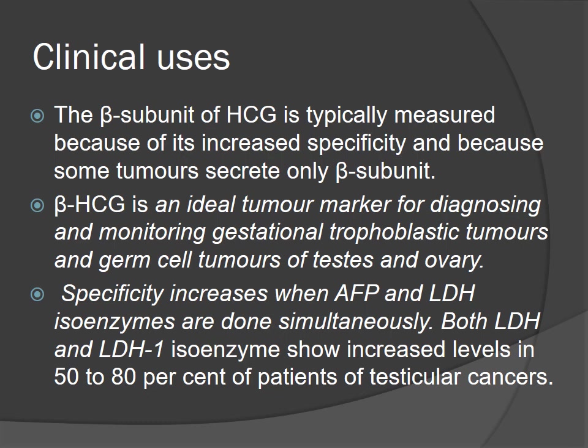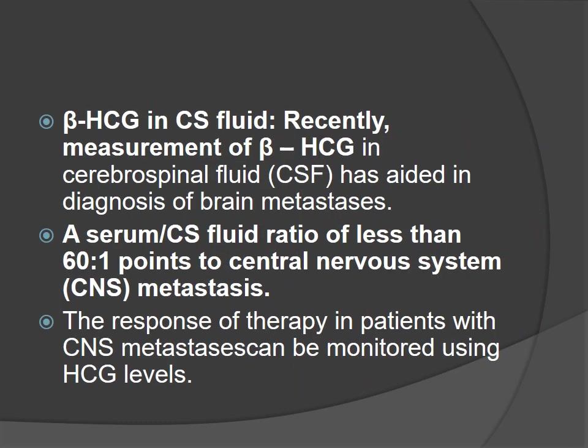Clinical uses: the beta subunit of HCG is typically measured because of increased specificity and because some tumors secrete only beta subunits. The beta subunit is the ideal tumor marker for diagnosing and monitoring gestational trophoblastic tumors and germ cell tumors of the testis and ovary. Specificity increases when AFP and LDH isoenzymes are measured simultaneously. Both LDH and LDH1 isoenzymes show increased levels in 50 to 80% of testicular cancer patients. Recently, measurement of beta-HCG in cerebrospinal fluid has aided in diagnosing brain metastasis; a serum-to-CSF ratio of less than 60 to 1 points to CNS metastasis.